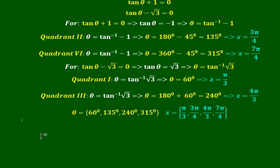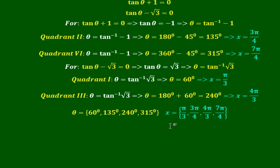The solutions are: θ = 60° in the first quadrant, 135° in the second quadrant, 240° in the third quadrant, and 315° in the fourth quadrant. In radians: π/3, 3π/4, 4π/3, and 7π/4.